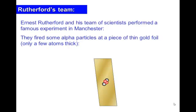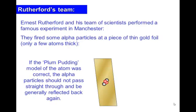And what they did is they got a piece of thin gold foil, which was only a few atoms thick, and they decided to fire some alpha particles. So these are radioactive particles through the thin gold foil, or at the thin gold foil. So if the plum pudding was correct, the alpha particles would not pass through and be generally reflected back again. So they'd be absorbed or reflected back. That was the idea, and that was the premise.